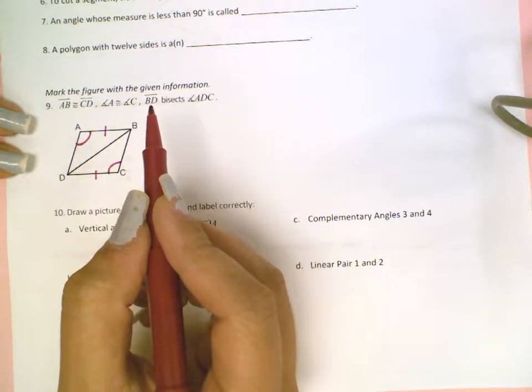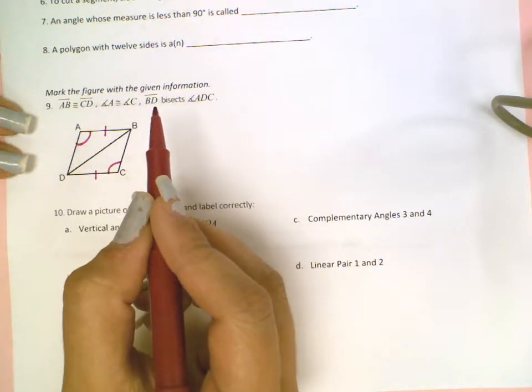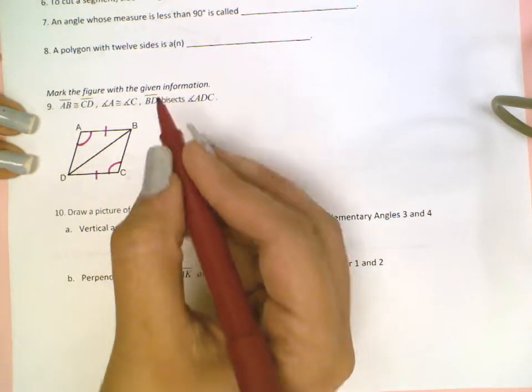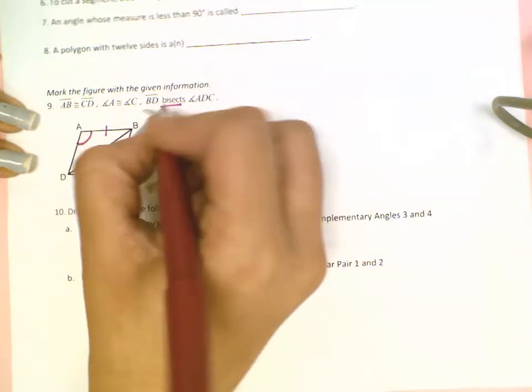Then it tells me that segment BD bisects angle ADC. The key word here is bisects, which means cuts in half.